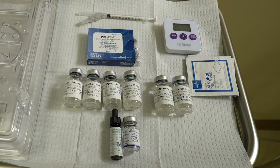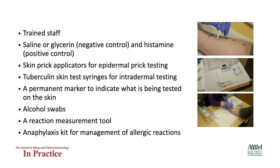All reagents used should be labeled to indicate the specific dilution, regardless of whether they are prepared in the pharmacy or in the clinic. Samples should be meticulously checked before testing. In addition to the testing reagents, the following is a checklist for immediate drug testing: trained staff, positive and negative controls, skin prick applicators for epidermal prick testing, tuberculin skin testing syringes for intradermal testing, a permanent marker, alcohol swabs, and a reaction measurement tool.